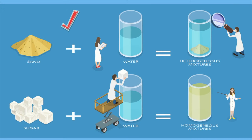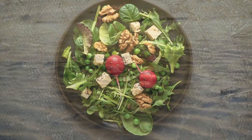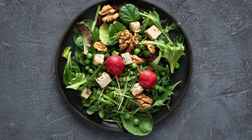A heterogeneous mixture is one in which you can visually see the different parts of the mixture. Sand is an example. Salad would be another example of a heterogeneous mixture.